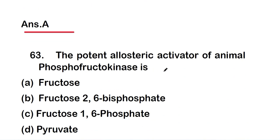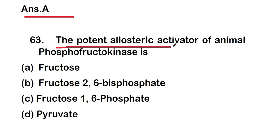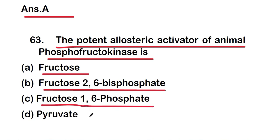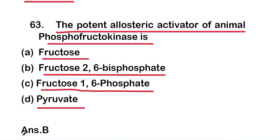The next question: the potent allosteric activator of animal phosphofructokinase is option A, fructose; option B, fructose 2,6-bisphosphate; option C, fructose 1,6-bisphosphate; or option D, pyruvate. The right answer is option B, fructose 2,6-bisphosphate. So the potent allosteric activator of animal phosphofructokinase is fructose 2,6-bisphosphate.